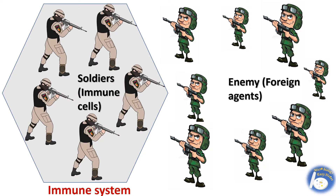The immune system is a defense system of our body. Like a country is protected by its defense army, likewise a body is protected by different kinds of cells — immune cells — which act like soldiers and protect us from outside enemies.